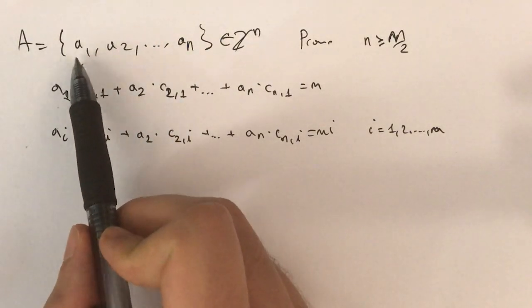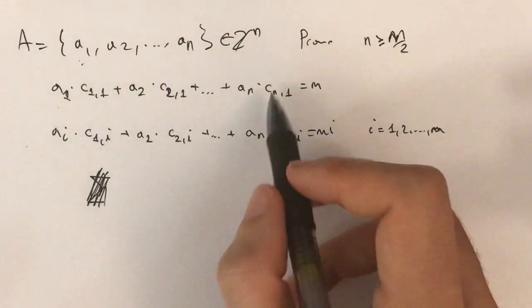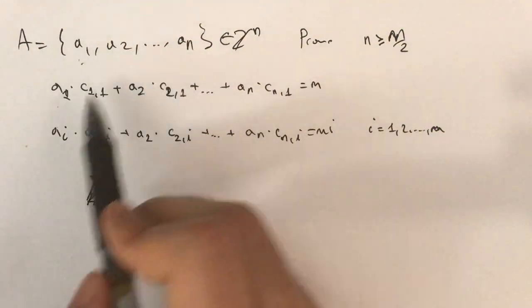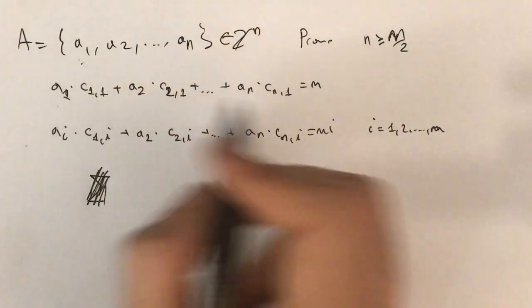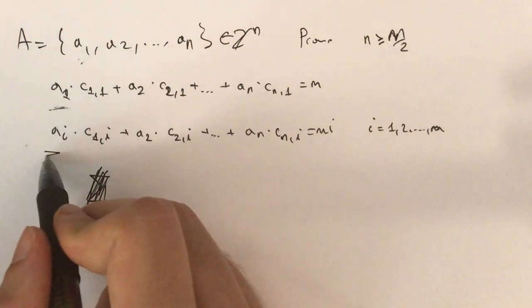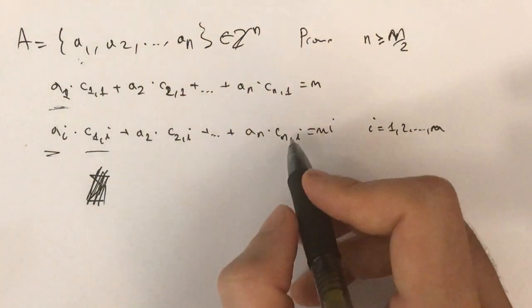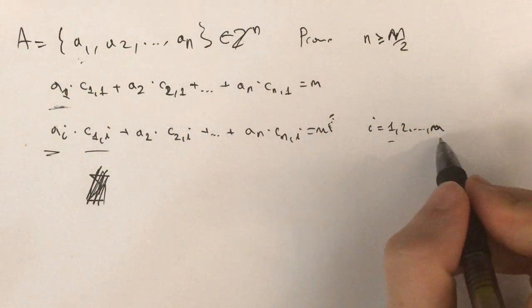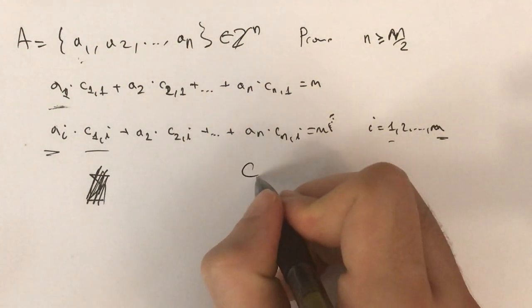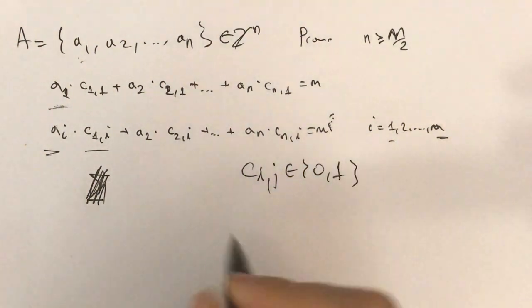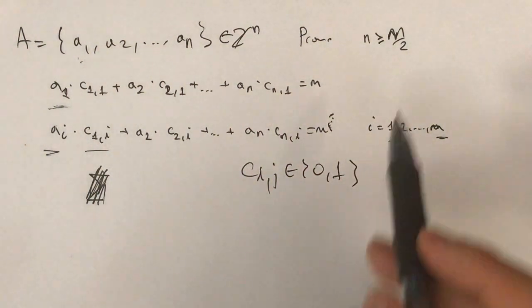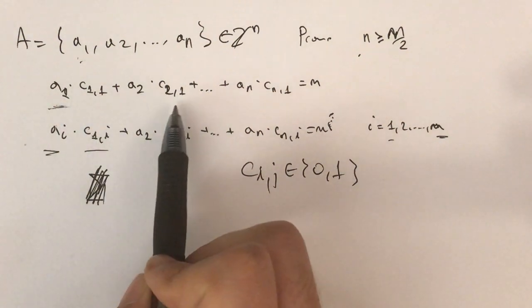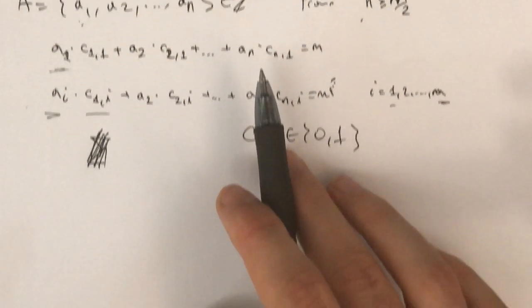So really this is what we're given. We're given n integers in A, and they are divided and we have m subsets of these, such that the sum of the members of each of the subsets is equal to m to the i for i=1 through m for all of these subsets. In other words, we have a1*c1i + a2*c2i + ... + an*cni = m^i for i=1 through m. And the only condition we have is that cij is either 0 or 1. This is what we have algebraically. And what we need to prove is that n ≥ m/2.